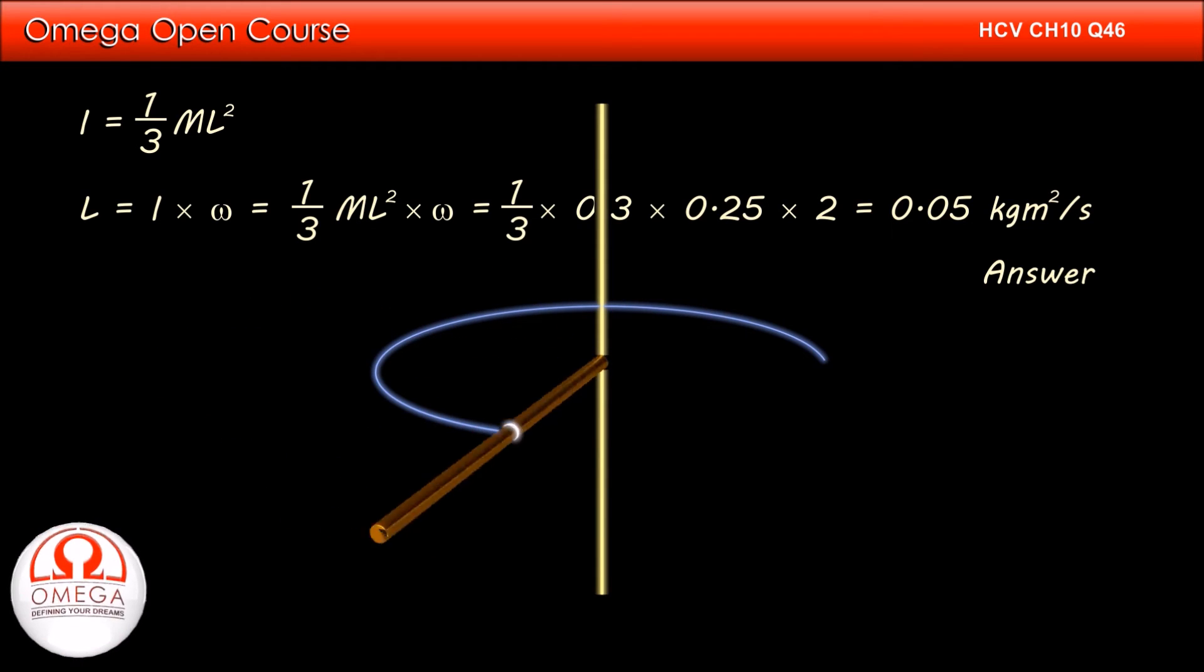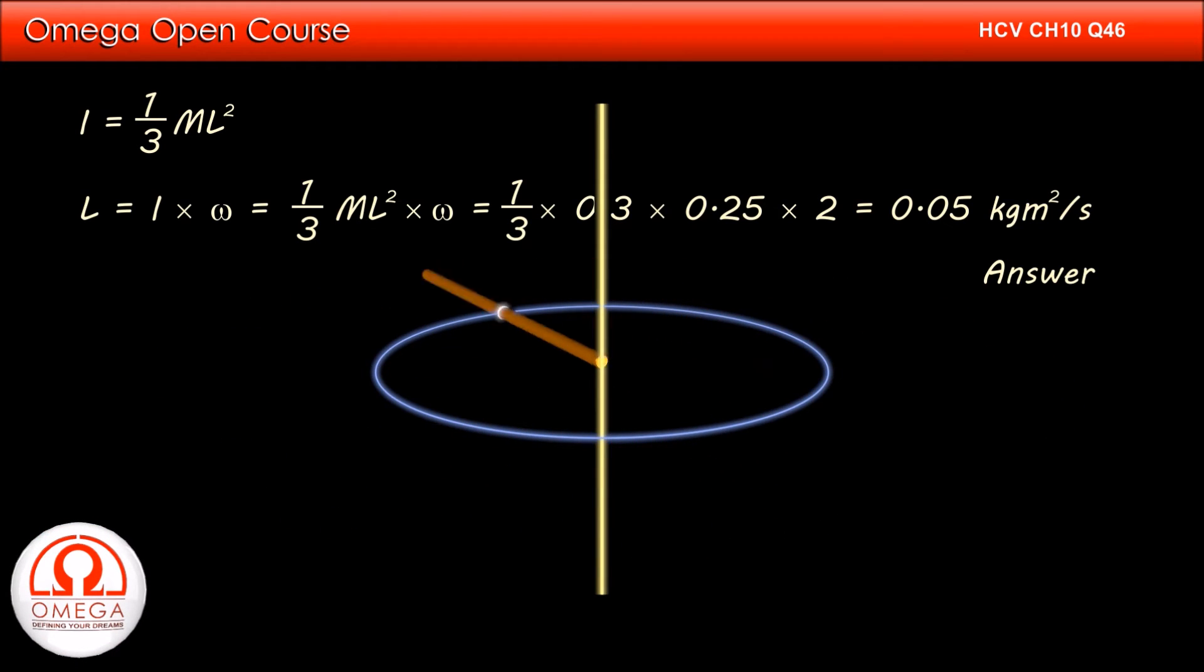Since the center of the rod is at a distance of 25 cm from the axis, the speed of the center of mass of the rod is rω, or 25 × 2, or 50 cm per second. This is the answer to part B of the question.